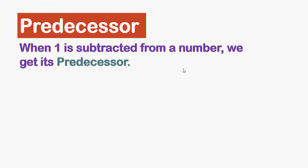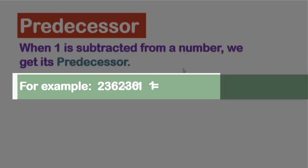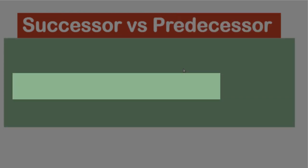For example, consider the number 236. When we subtract one from 236, we get 235, which is the predecessor of 236.